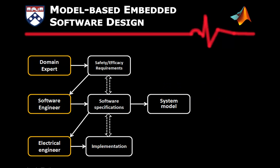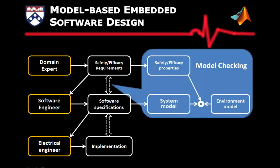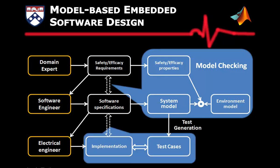Model-based design is a method to alleviate this problem. Instead of software specifications, a system model is used to represent the behaviors of the system. The requirements are translated into formal properties. Together with an environment model, the closed-loop system model is verified against the properties using model checking techniques. Model checking ensures that the software specifications satisfy the requirements. Using a code generation tool chain, the implementation of the system can be generated from the system model, which can also be used to generate test cases to prove conformance between the model and the implementation.